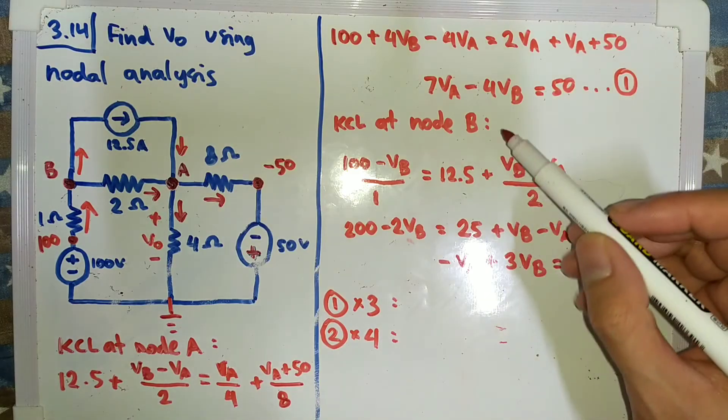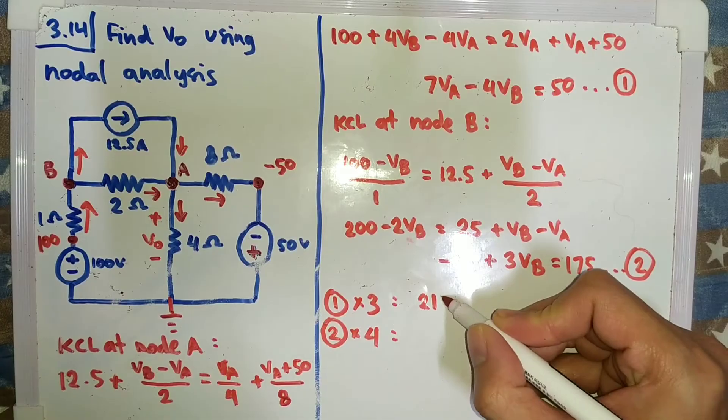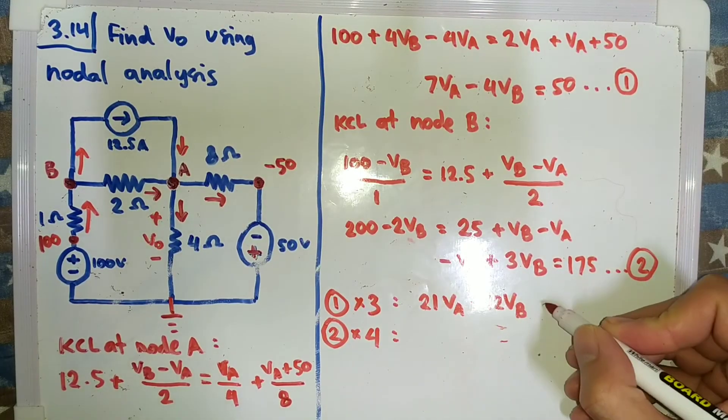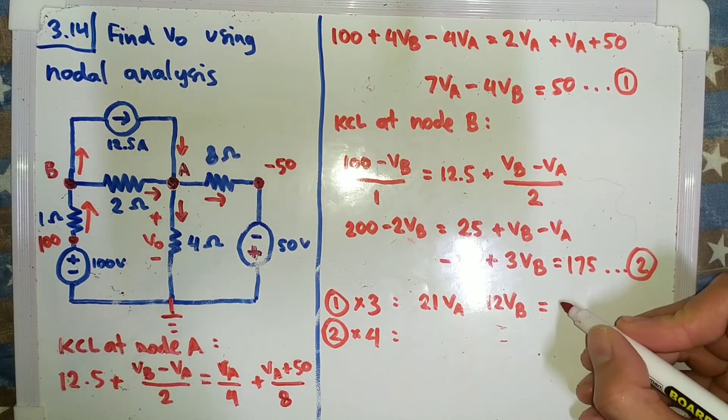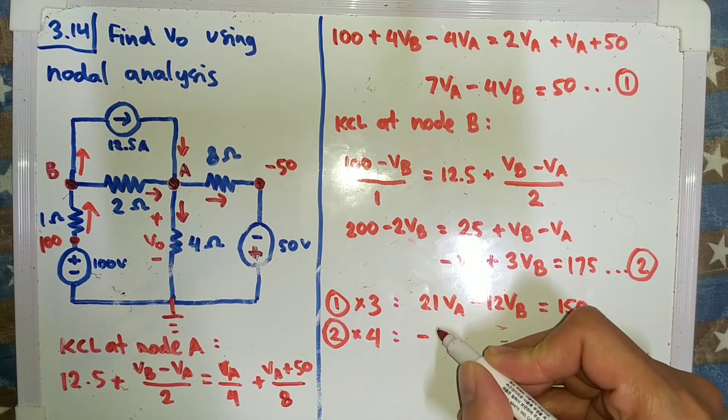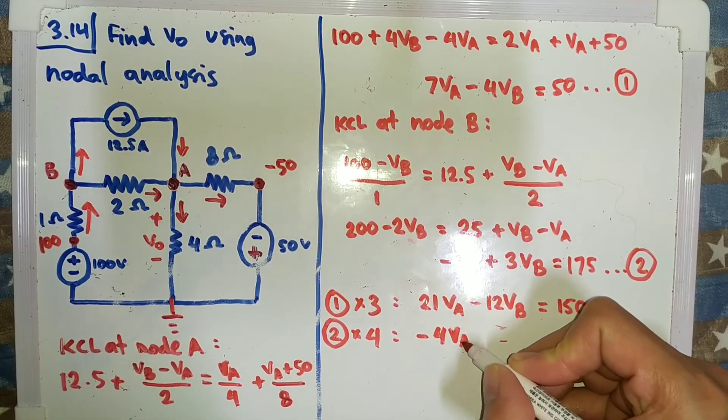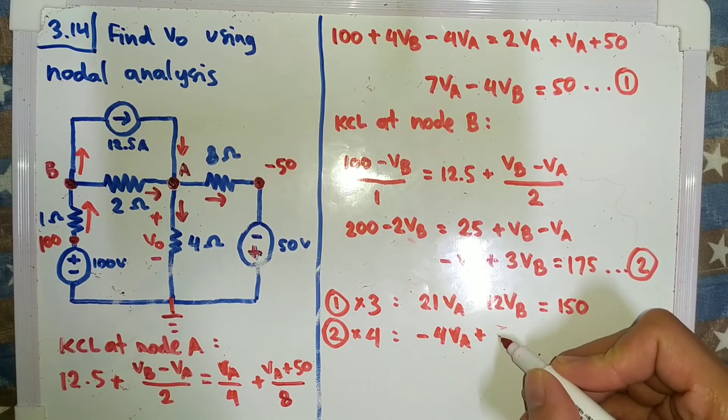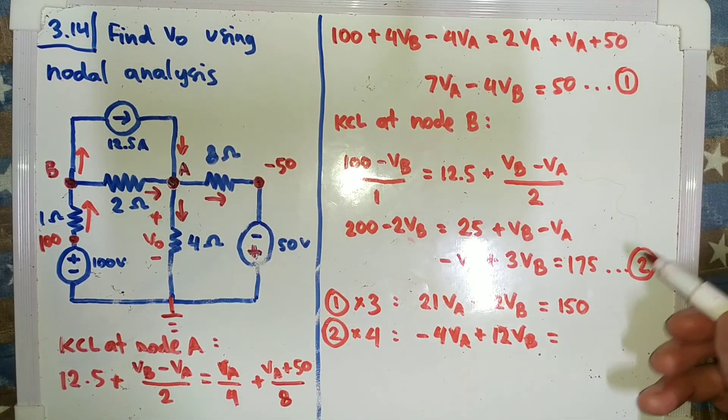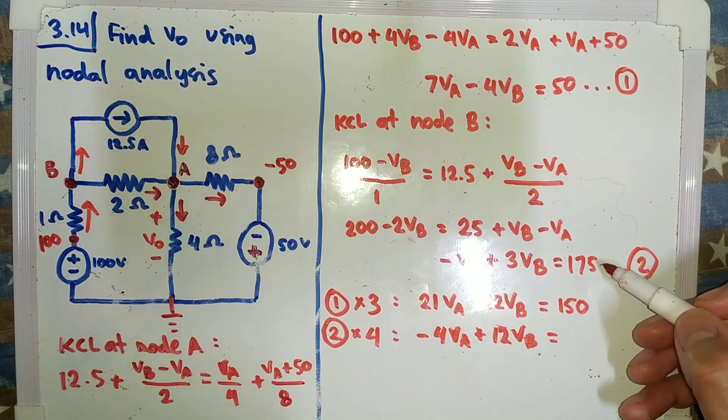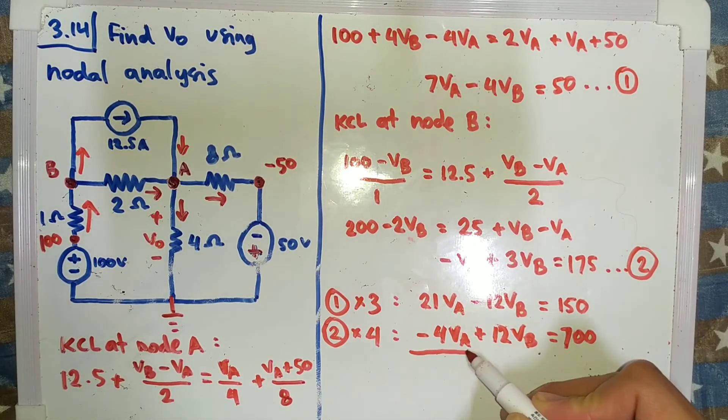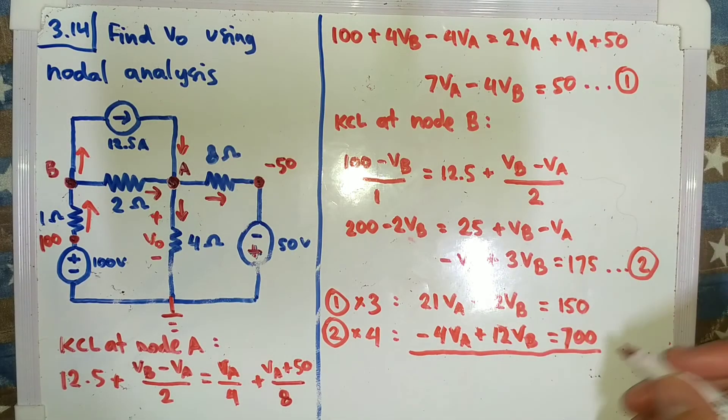And equation number 1 we multiply it by 3, so I will get 21VA minus 12VB is equal to 150. And the second one multiply by 4, I get minus 4VA plus 12VB, and then we get 175 times 4, it will be 700.